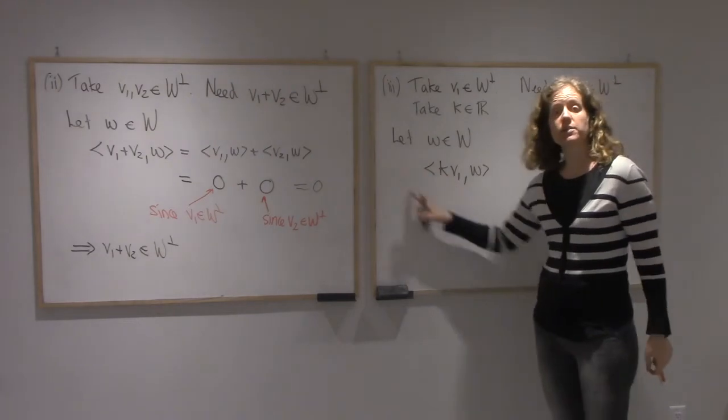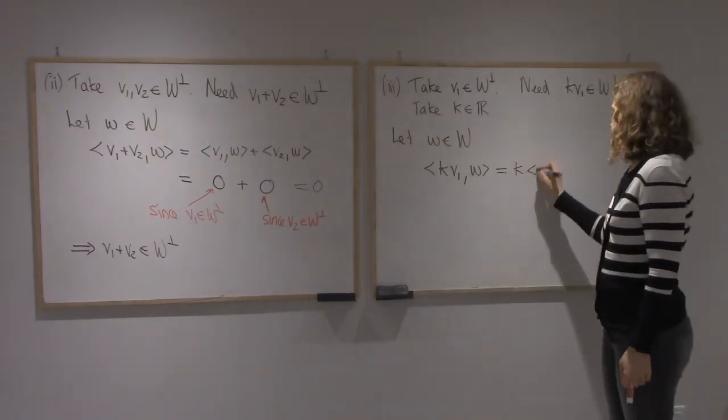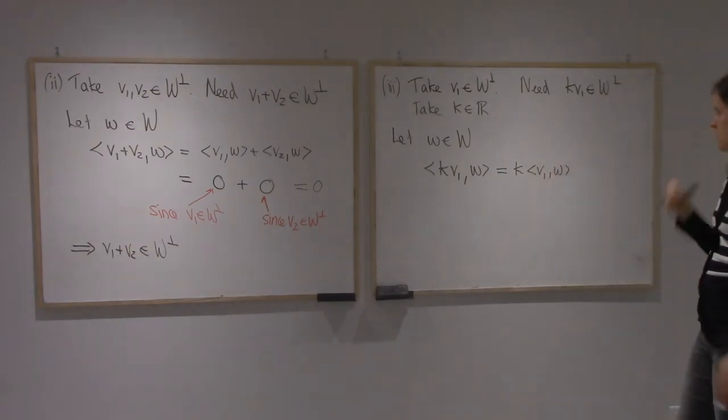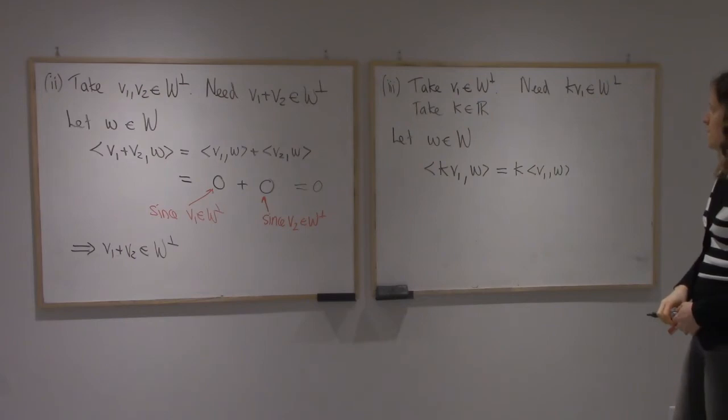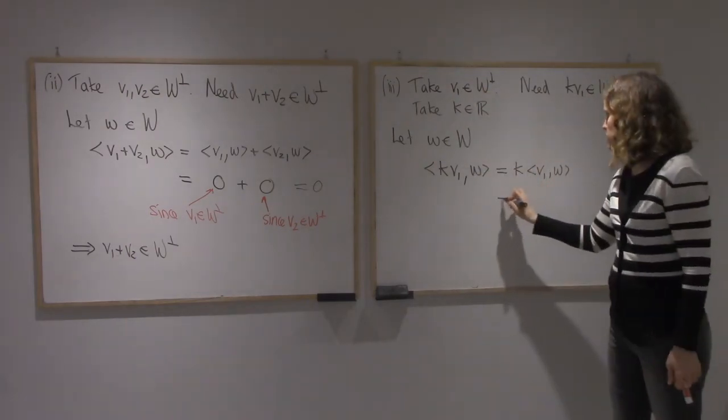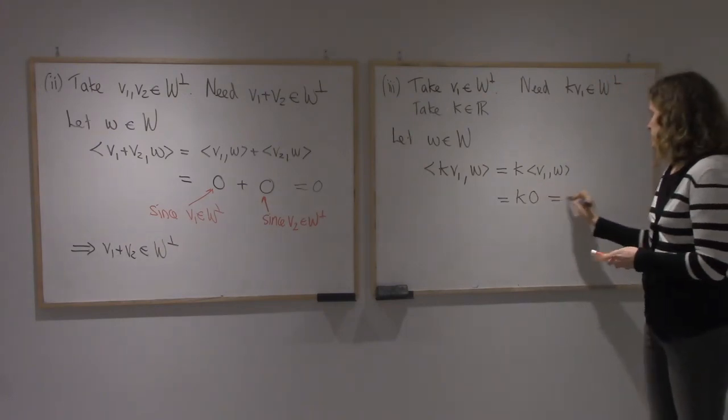Again, because it's an inner product, scalar multiples can factor out. Now since v1 is in W-perp, it's perpendicular to this w, so I get k times 0 and then that's 0.